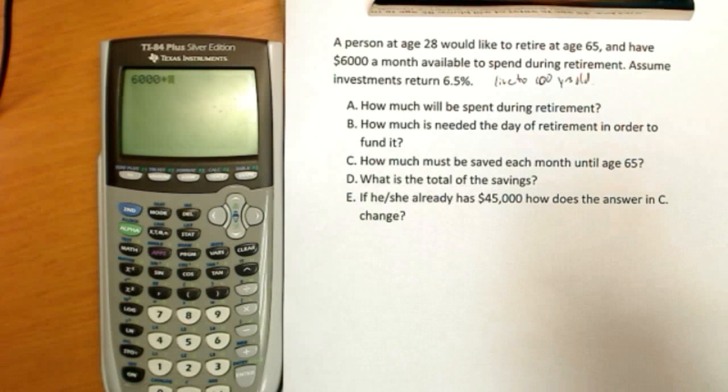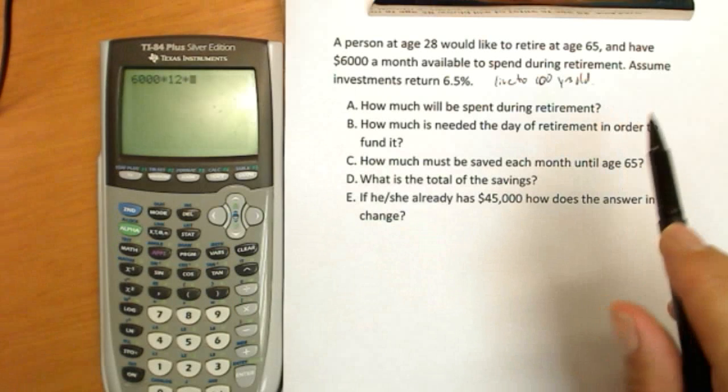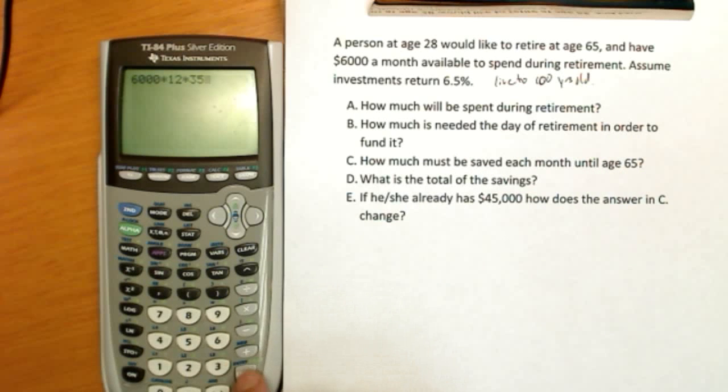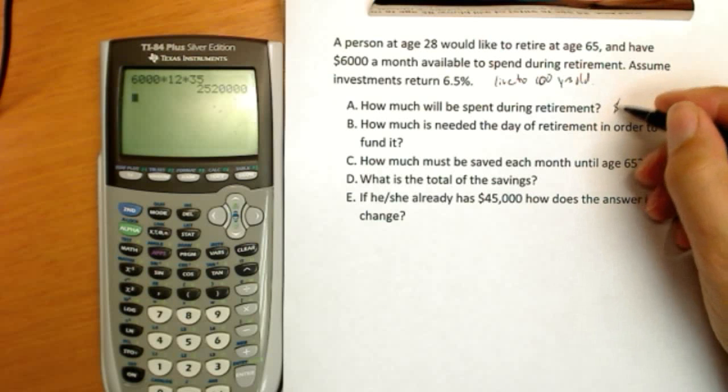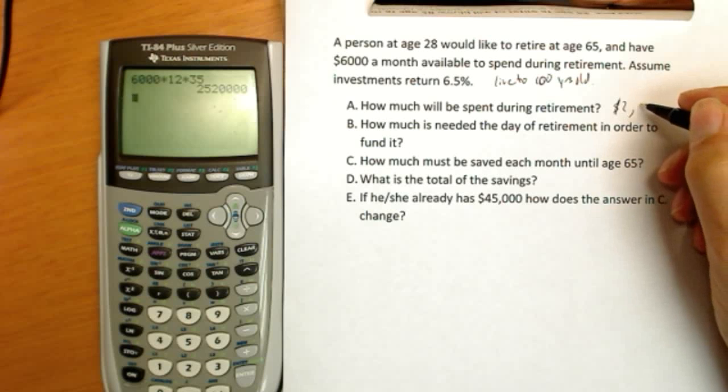You're spending $6,000 a month times, well, how many months do we have? 12 months in a year, and between ages 65 and 100, we have 35 years. So we can see this person is going to spend a really tremendous amount of money, $2,520,000.